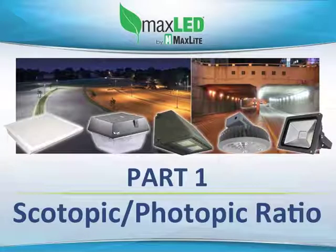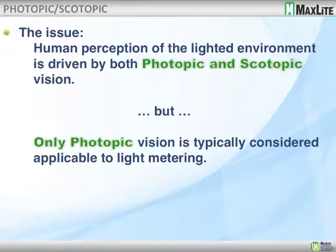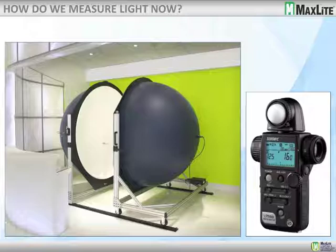The first thing we'll talk about is the scotopic-photopic ratio. The issue is human perception of a lighted environment is driven by both photopic and scotopic vision, but primarily we've used photopic since the beginning of measuring light. All our light meters are based on photopic measurements. On the next page we can see some tools used to measure light photopically — a sphere and a light meter.